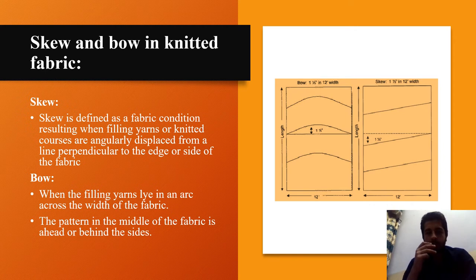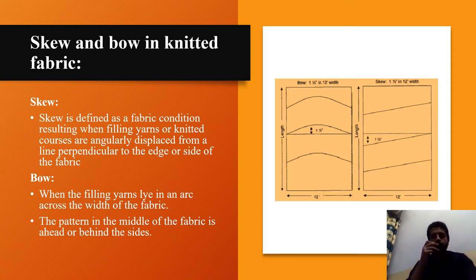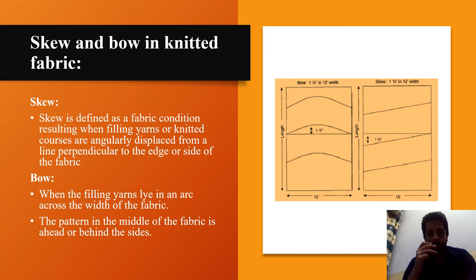Skew is defined as the fabric condition resulting when fabric yarns or knitted courses are angularly displaced from a line perpendicular to the edge or side of the fabric. Bowing and skewing affect striped or patterned fabric quality more than solid color fabrics, as greater contrast in the patterns makes the distortion more prominent. When the filling yarns lie in an arc across the width, the pattern in the middle is ahead or behind the sides.